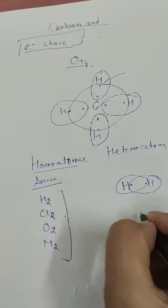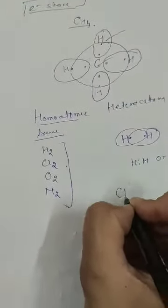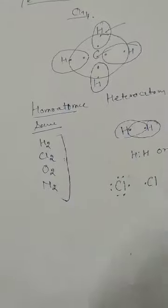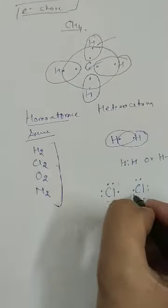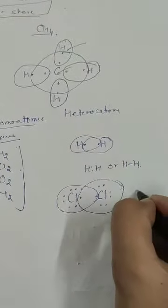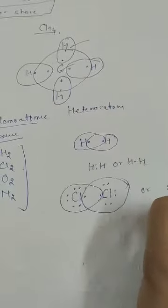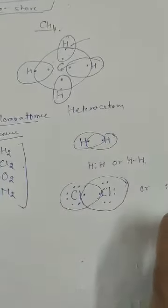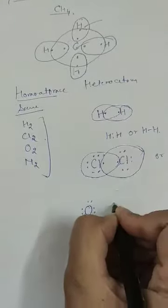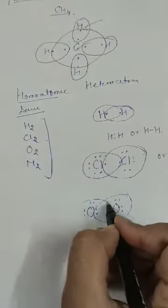In homoatomic molecules, the same atoms share electrons from their outer shell with each other. For example, in O₂, oxygen shares two electrons with another oxygen atom, completing their octets through a double bond.